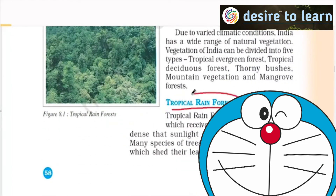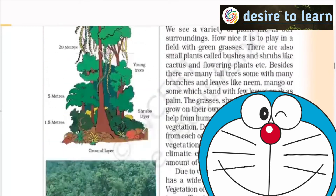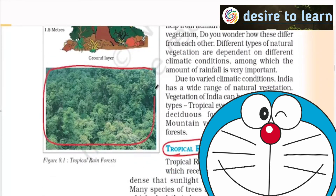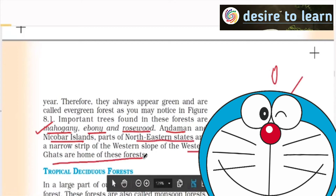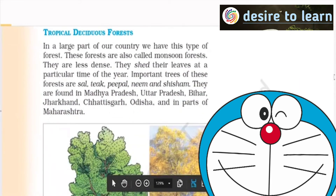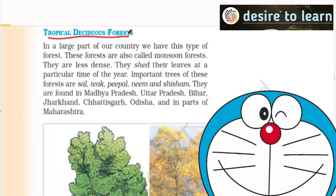You have tropical rainforests — vegetation will be thick, sun's rays do not penetrate at all. Trees: mahogany, ebony, rosewood — you have to remember this. In India, where is it present? Andaman and Nicobar Islands — they get rainfall throughout the year. You have the northeastern states with heavy rainfall. Western Ghats also get good rainfall and there you find evergreen forest. Then you have tropical deciduous forest — usually teak, sal, peepal, neem, shisham — all these are part of it.